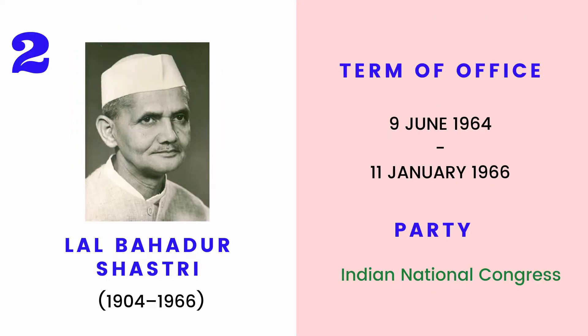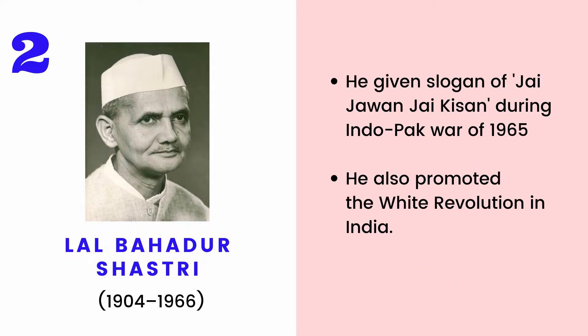Lal Bahadur Shastri was the second Prime Minister of India and a senior leader of the Indian National Congress party. He gave the slogan 'Jai Jawan Jai Kisan' during the 1965 Indo-Pak War. He also promoted the White Revolution in India.